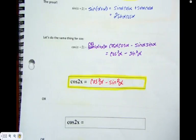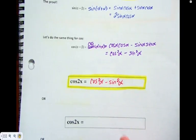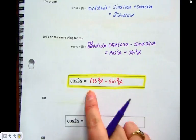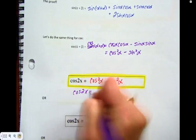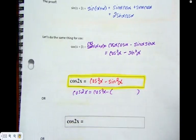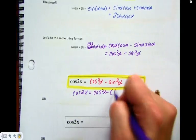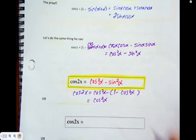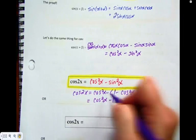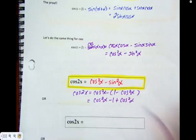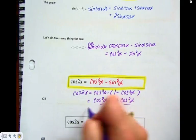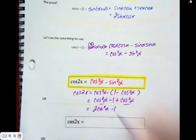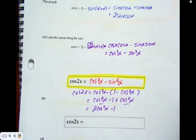But wait, there's a second formula. All I'm going to do is use our identity that sine squared plus cos squared equals 1, and I'm going to replace the sine squared. We know that sine squared alpha is 1 minus cos squared alpha, so I'll substitute that in. Distributing the negative: negative times 1 is negative 1, negative times negative is positive cos squared alpha. Collecting like terms gives me 2 cos squared alpha minus 1 — that becomes formula number 2.